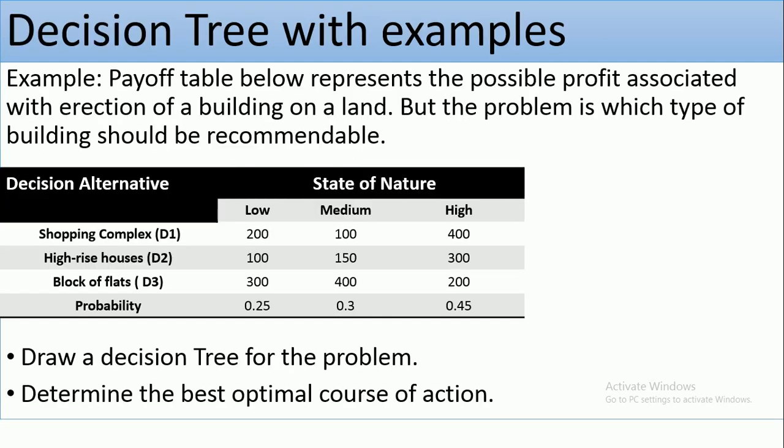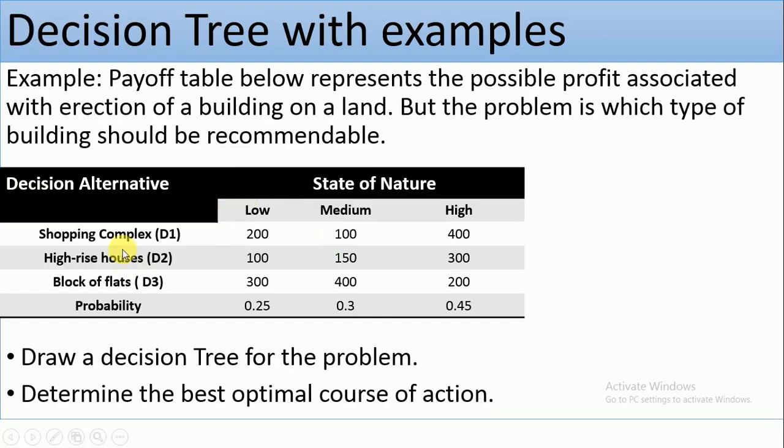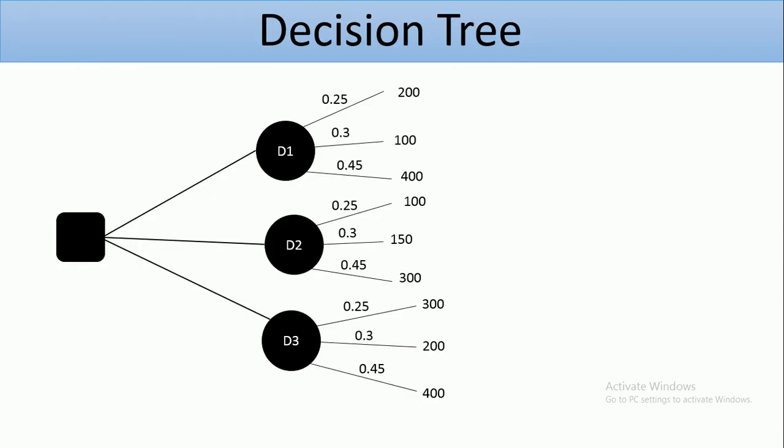You can see we have three decision alternatives: Shopping Complex D1, High-rise Houses D2, and Block of Flats D3. So this would be the first three branches that will come out of a node. And you can see that here. So we have three branches, D1, D2, and D3.